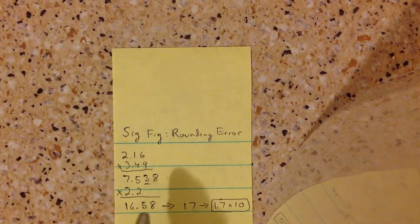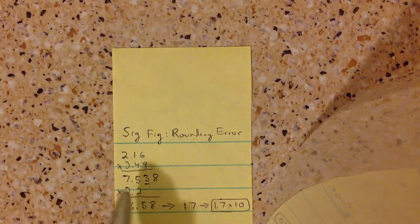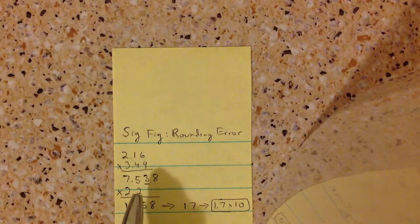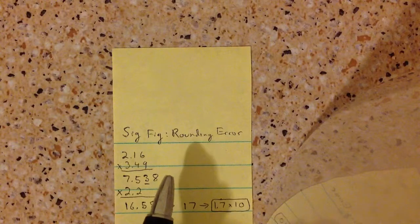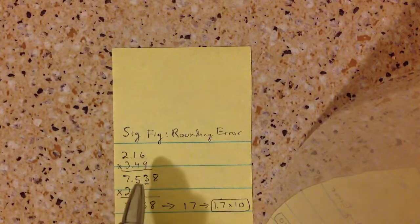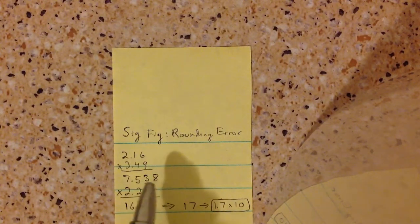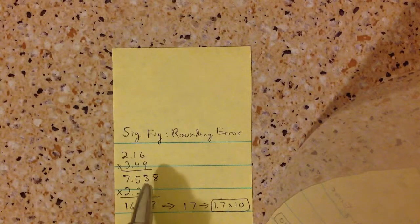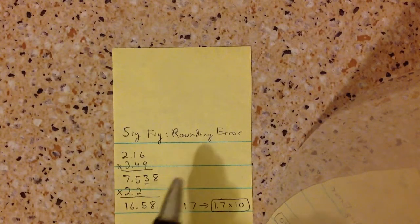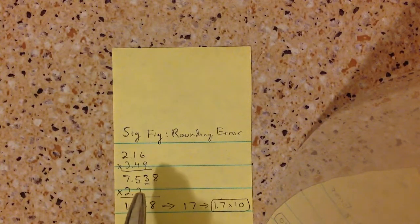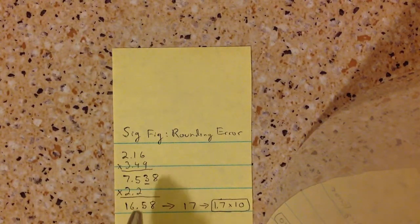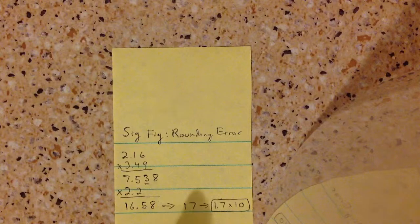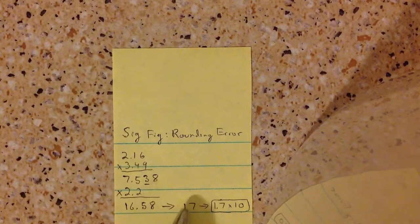And that gets you 16.58. Now for this, you actually have to look at each one respectively. For this one, 7.53 is 3 sig figs, that's why I underlined it. This one's 2 sig figs. So the final answer should be 2 sig figs. So you convert 16.58 to 17 because it rounds up.